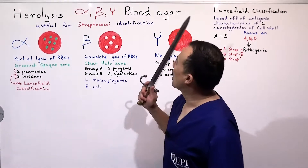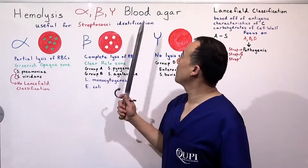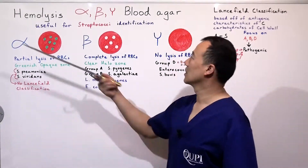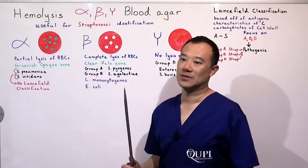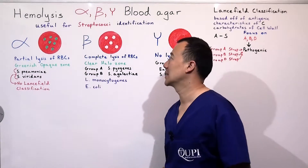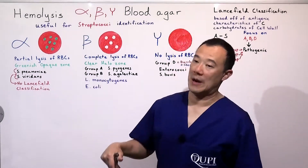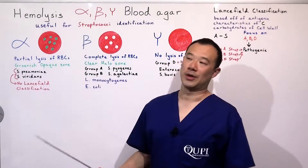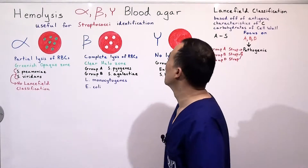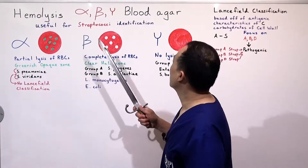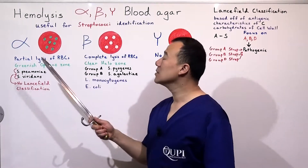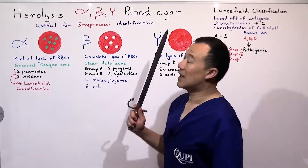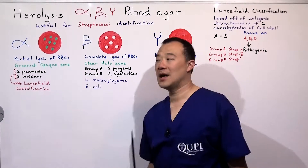Hemolysis. We've got alpha, beta, and gamma hemolysis. What is hemolysis? It's basically red blood cells being destroyed — lysis of red blood cells. And this is useful for streptococci identification.